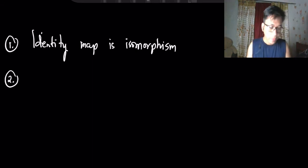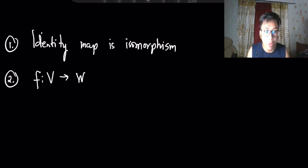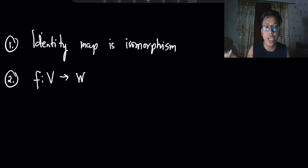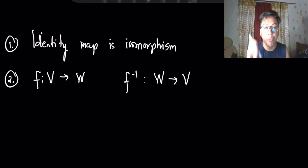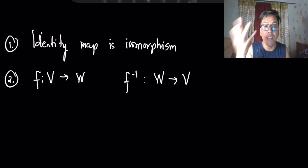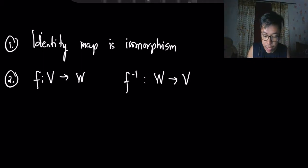Number two: if you have a mapping f from V to W and it's an isomorphism — meaning it's a linear transformation and bijective — we have shown on the previous video that the inverse is also a linear transformation. Since the inverse of a bijective function is also bijective, the inverse is also an isomorphism.